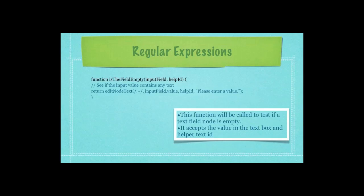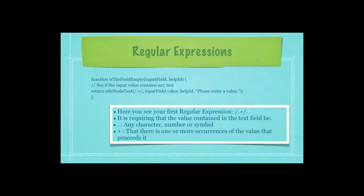This function will be called to test if a text field node is empty. It accepts the value in the text box and the helper text identification number. Here you see your second regular expression: forward slash dot operator plus sign and another forward slash.